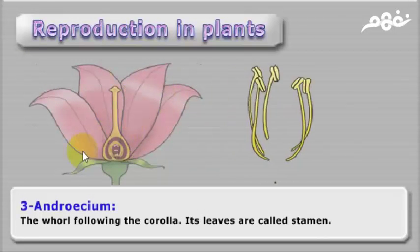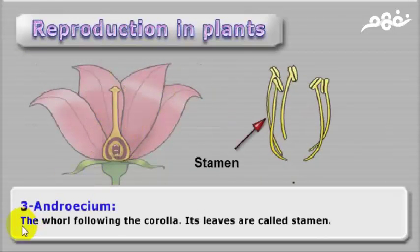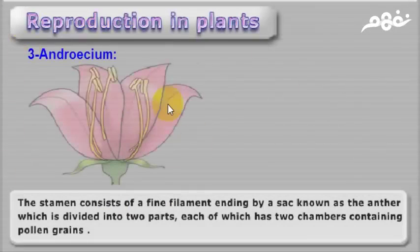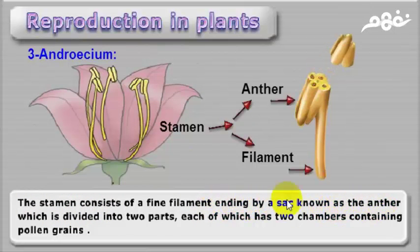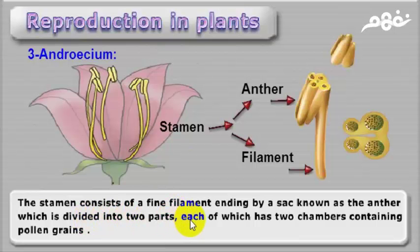Number three is Androecium. The whorl following the corolla. Its leaves are called stamens. The stamens consist of a fine filament ending in a sac known as the anther, which is divided into two parts, each of which has two chambers containing pollen grains.